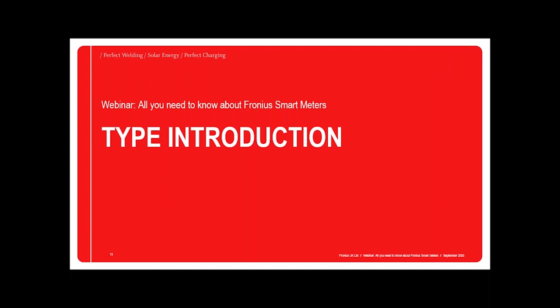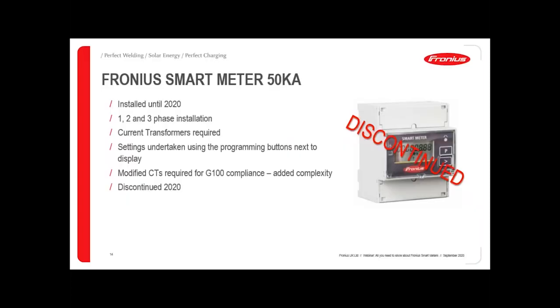So there are a couple of the key functions available from using the smart meter. A number of you may be familiar with the Fronius Smart Meter 50Ka. This unit was installed on pretty much every installation up until 2020. It was available for single, split phase and three-phase installations, and it required current transformers. The programming of this was undertaken using the buttons on the front of the screen — a P button and an arrow button. In order to use this for export limitation, we needed to provide modified CTs, which were quite difficult to install with a lot of additional programming. So this unit has now been discontinued.